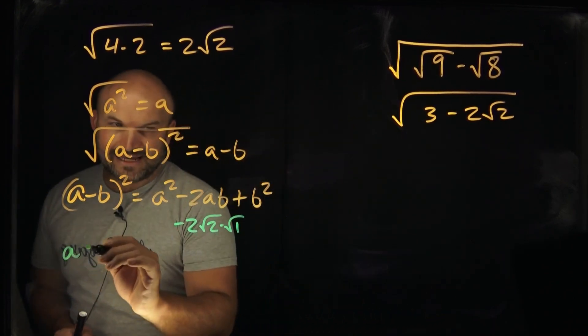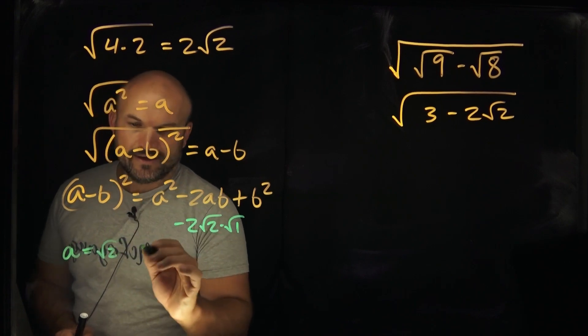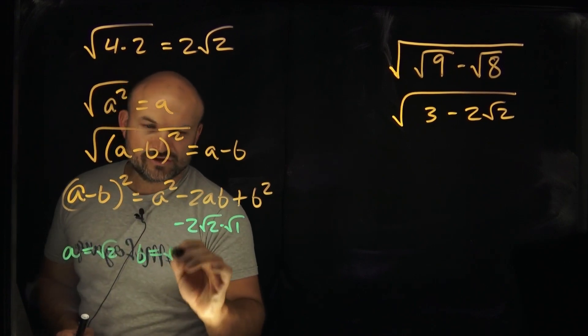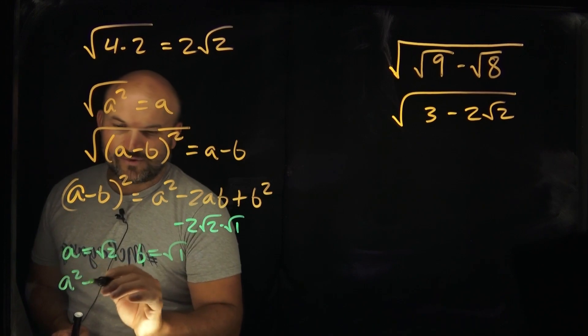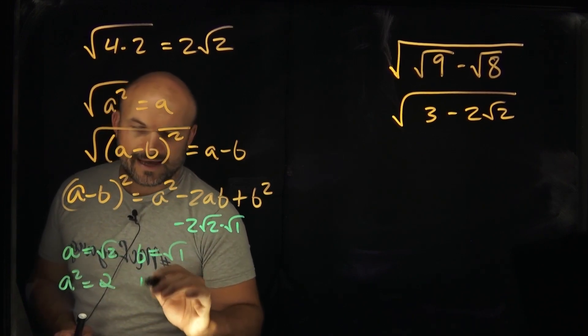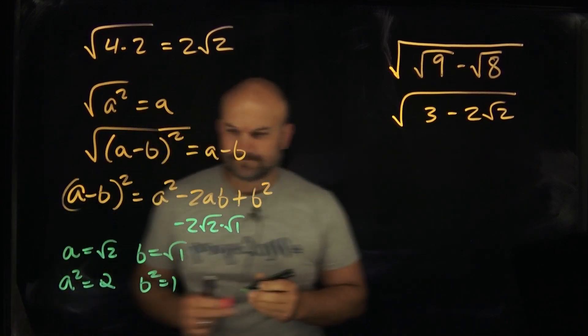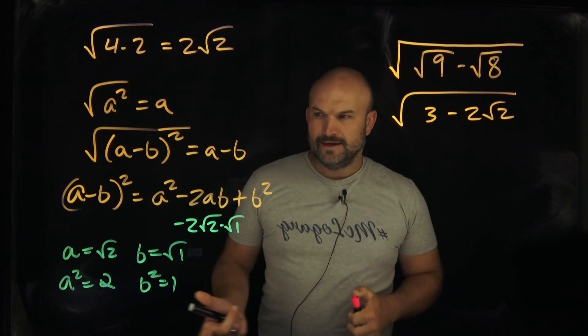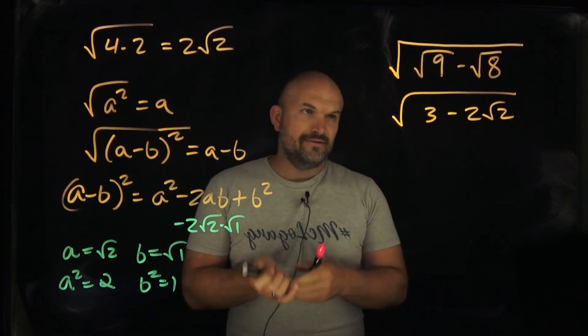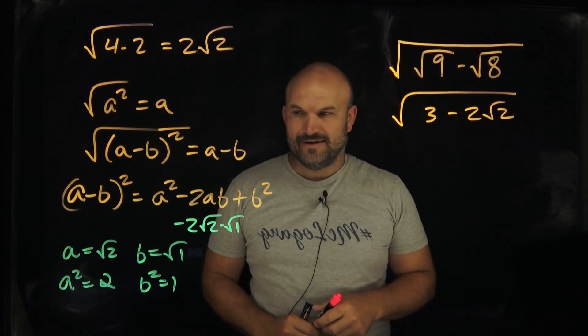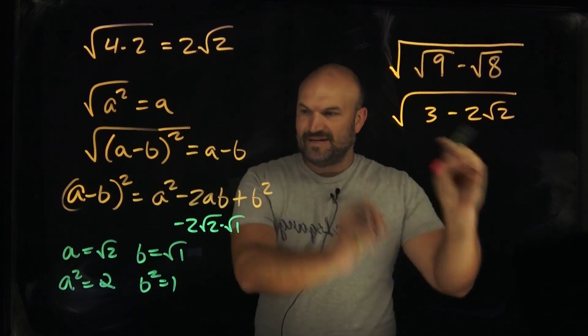So therefore, if a is equal to a square root of 2, and b is equal to the square root of 1, therefore, a squared equals 2, and b squared is equal to a 1. Now, we're still kind of stuck here, because, again, this is not in that format, right?